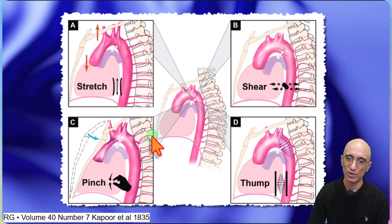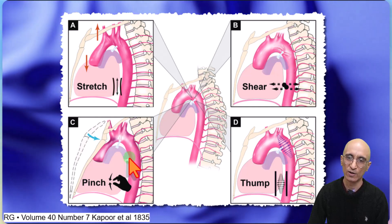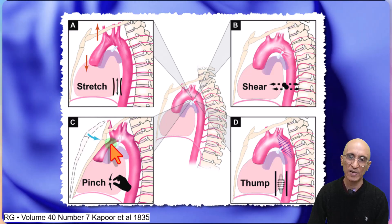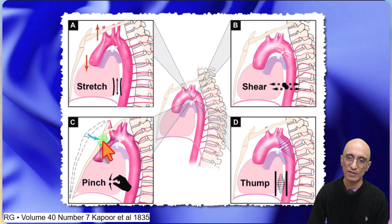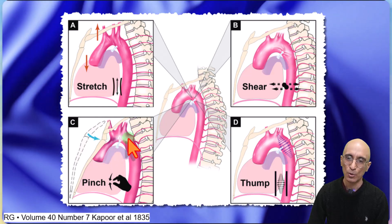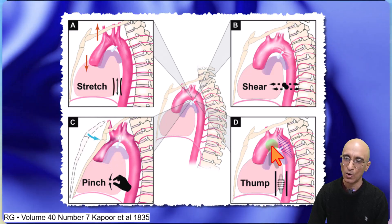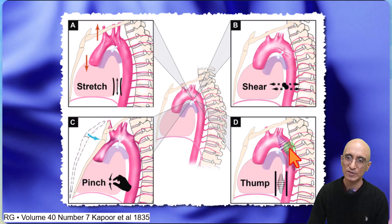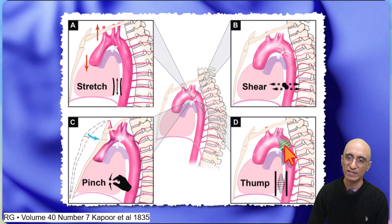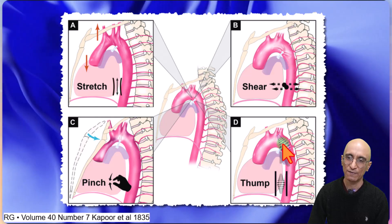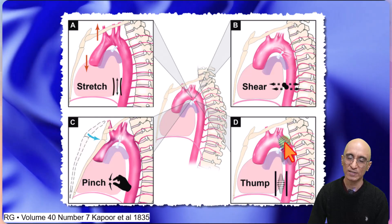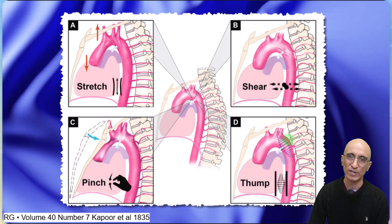It can also be due to pinching of the aorta between the bone structures, or due to a sudden increase in intravascular pressure with a thump effect causing aortic injury.